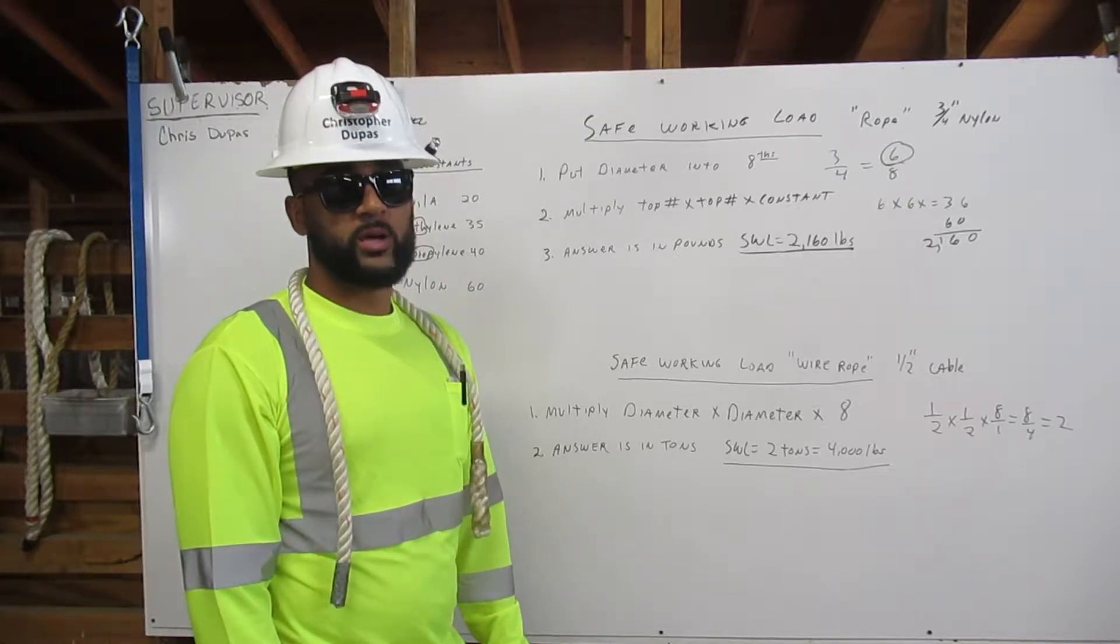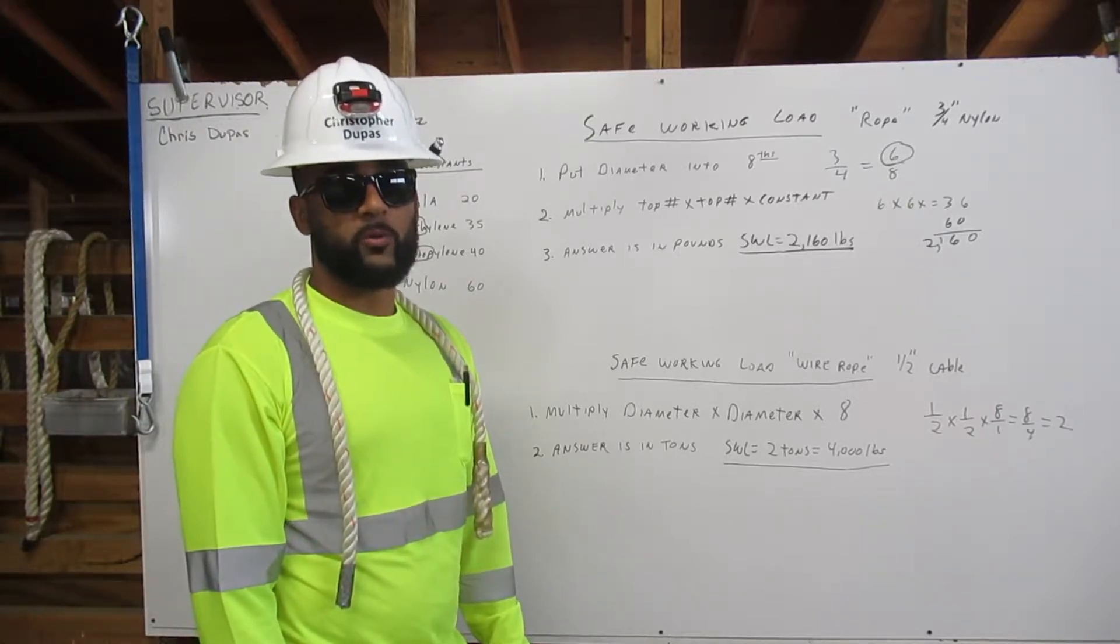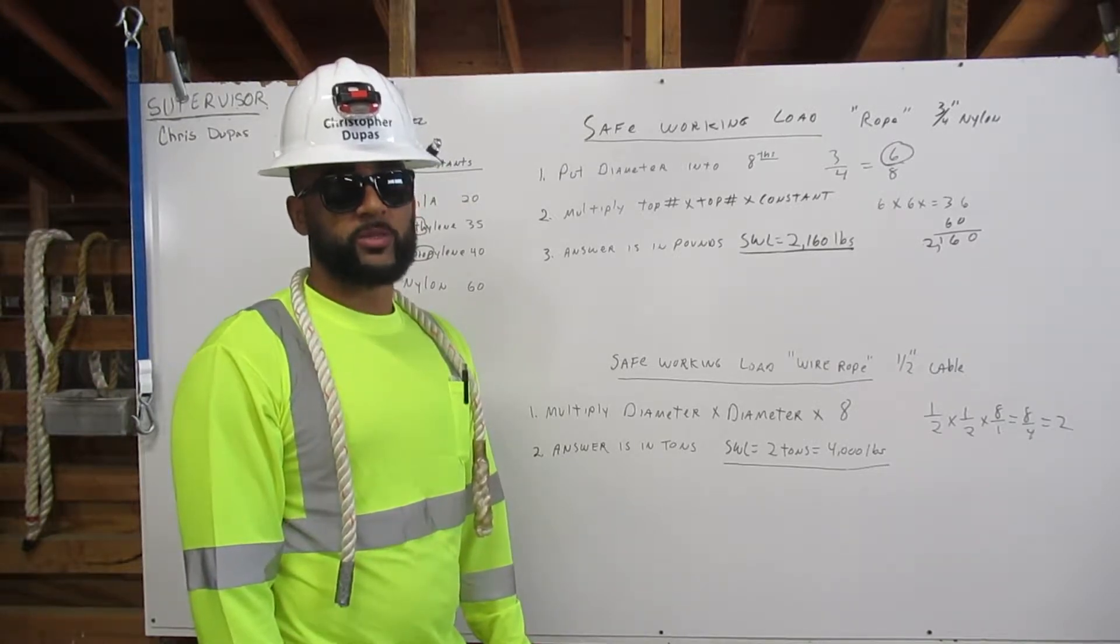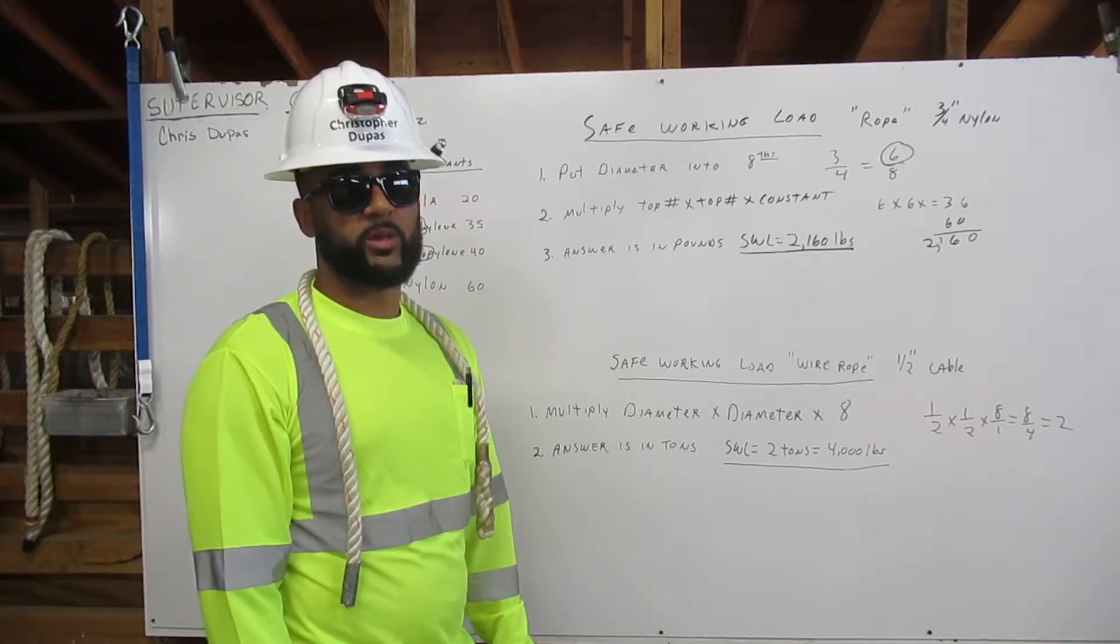I'm going to explain how to calculate the safe working load for rope and wire rope rigging. This safe working load is a number that represents one-fifth of the rigging's capacity. Let me explain.